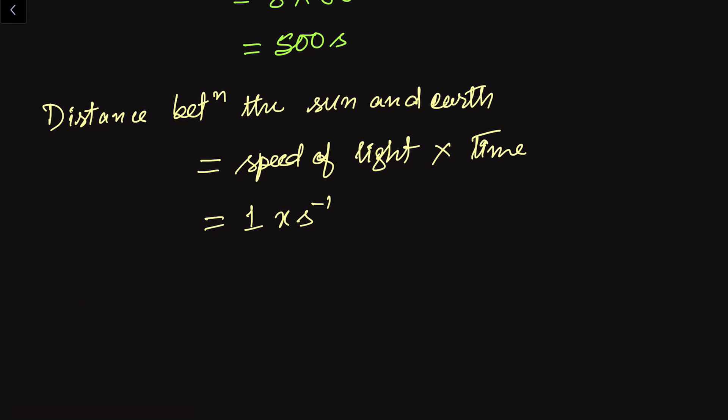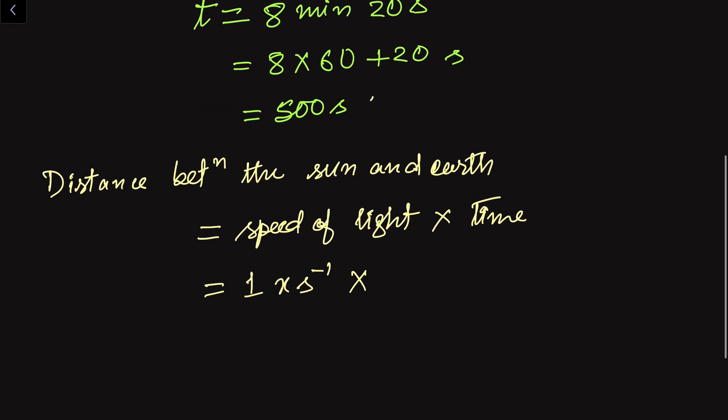So this is the speed of light times time. What is the time? Time we have got is 500 seconds, that is 8 minutes 20 seconds. So 500 seconds. So this per second and this second will cancel out.